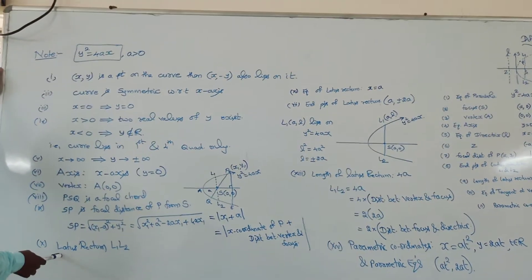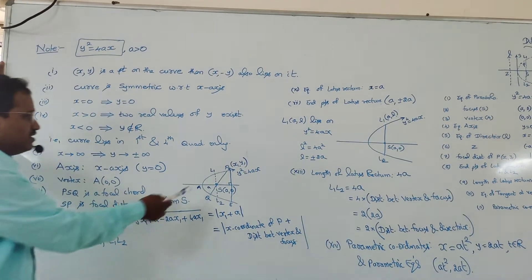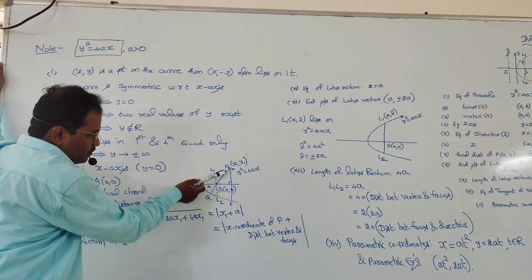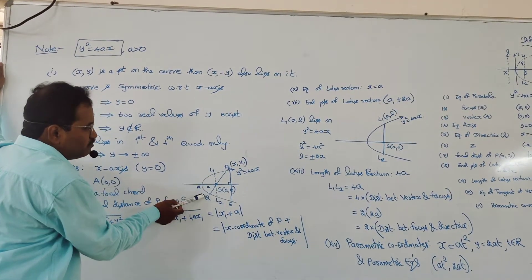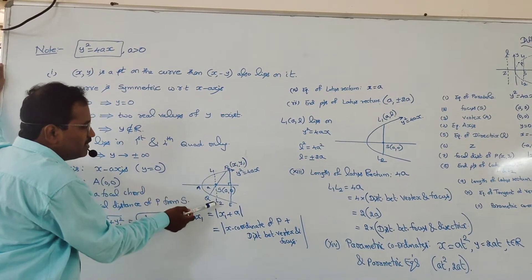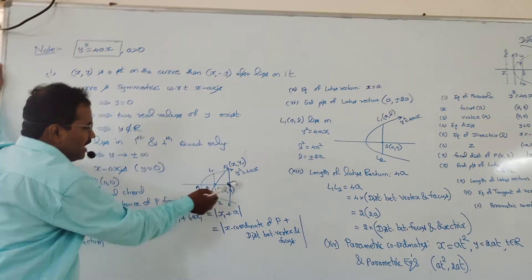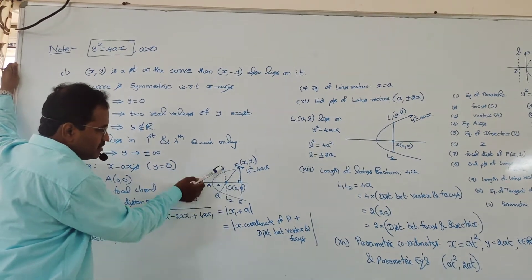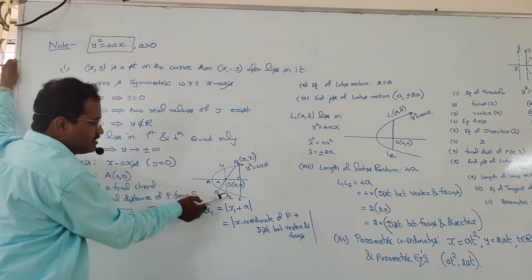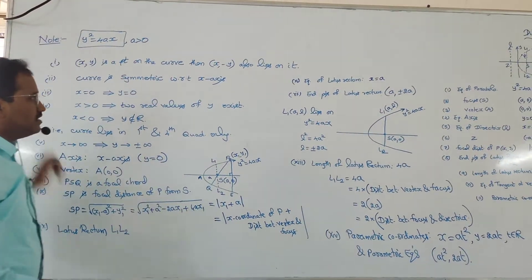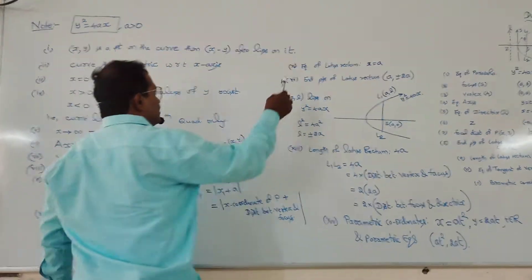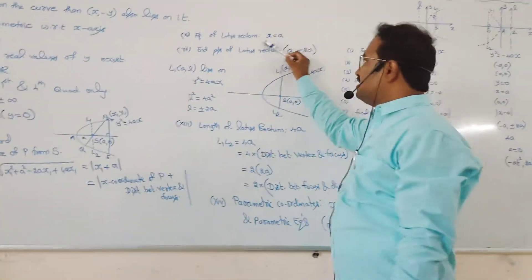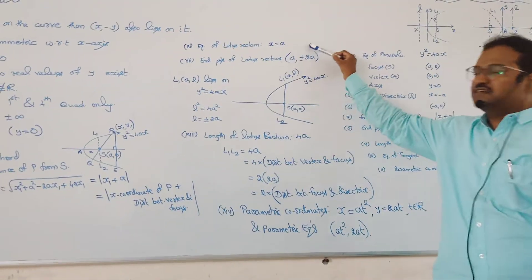Next, the latus rectum — that is, the focal chord perpendicular to the axis. L₁SL₂ is the latus rectum. The equation of the latus rectum is x = A.